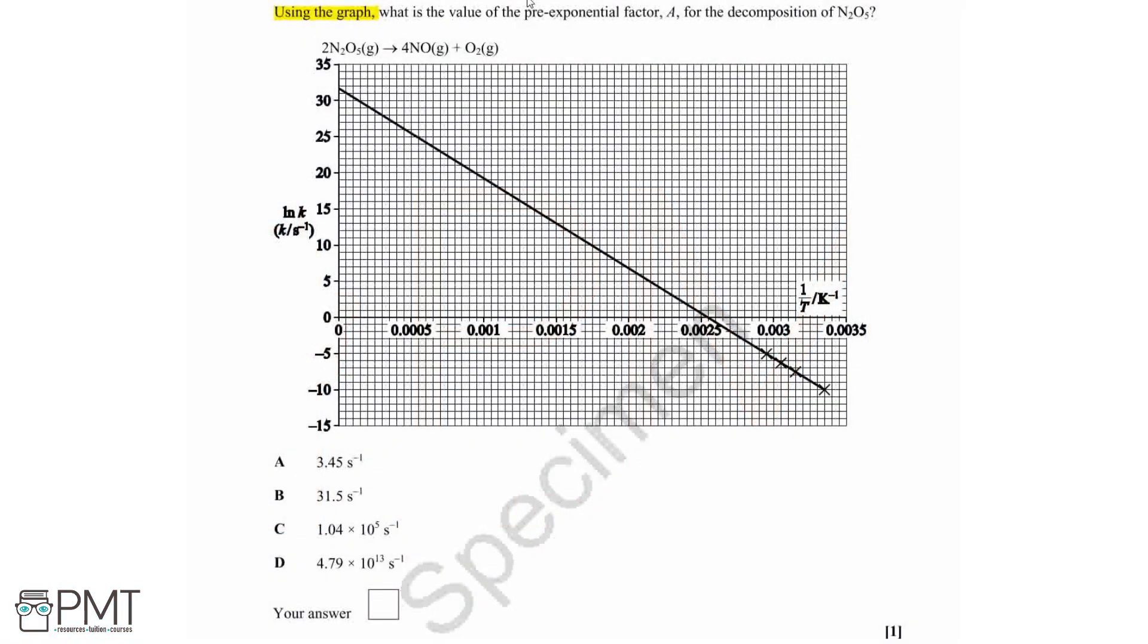Using the graph, what is the value of the pre-exponential factor A for the decomposition of N2O5? We've got our equation here for the decomposition.